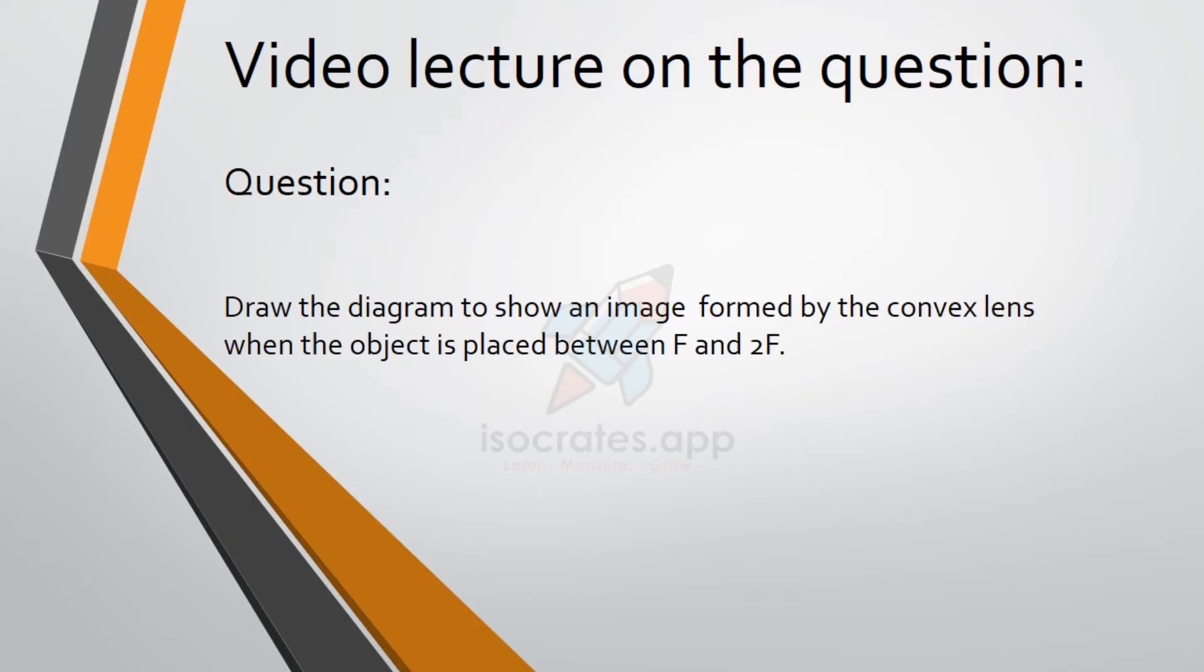Welcome to the video lecture. Question: Draw the diagram to show an image formed by a convex lens when the object is placed between F and 2F.